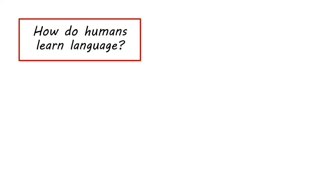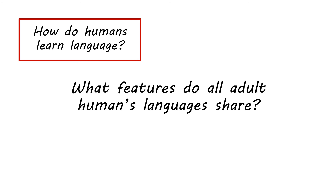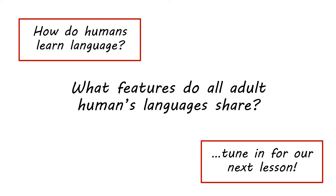So if we're trying to answer the question of how humans learn language, we really first have to ask: what features do adult human languages share? That way we can figure out what a language is and what it means to have learned one. That's what we're going to talk about in the next couple of lessons — what is a language, how do we think about having learned a language, and what does a normal adult's language development end state look like? That's the next lesson — thanks.